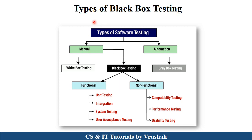The next topic is types of black box testing. Black box testing has two types: functional and non-functional testing. Functional testing is divided into unit, integration, system, and acceptance testing. Non-functional testing is divided into compatibility, performance, and usability testing. We will discuss these types of testing with examples in the next sessions.